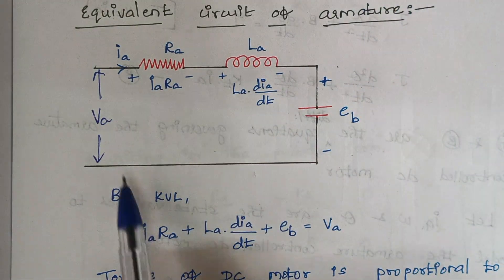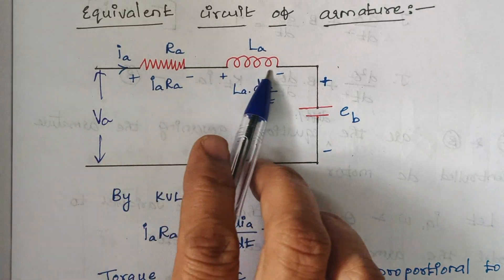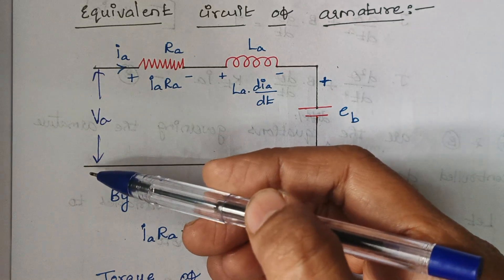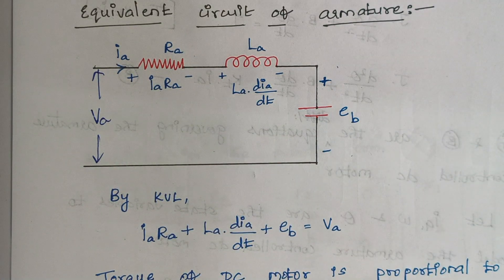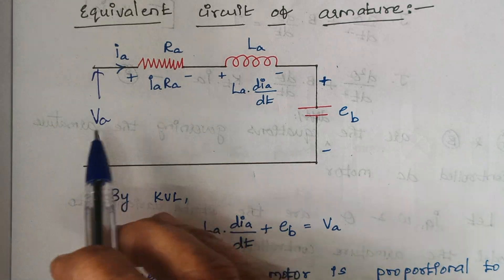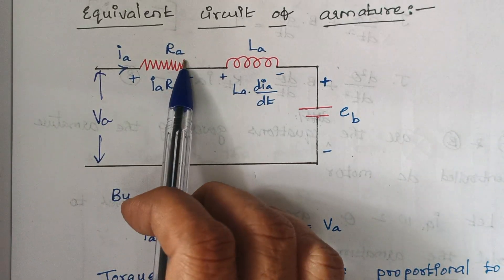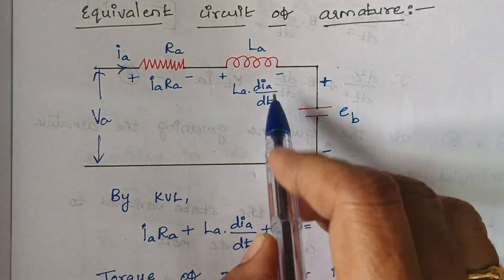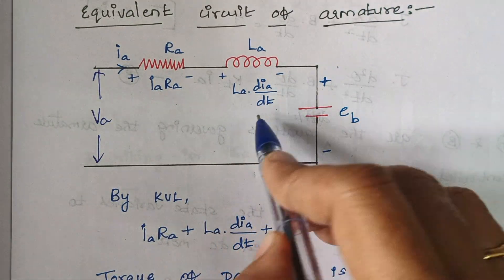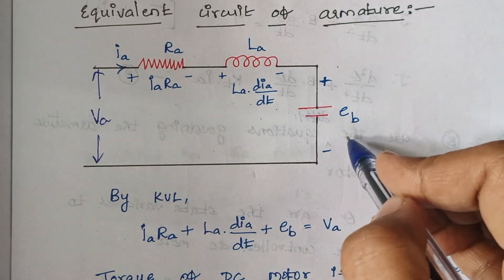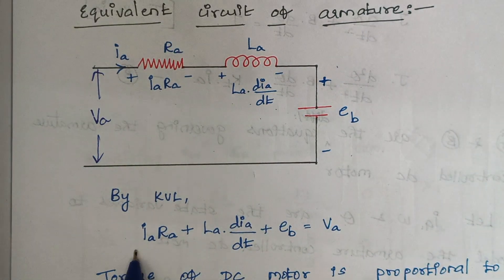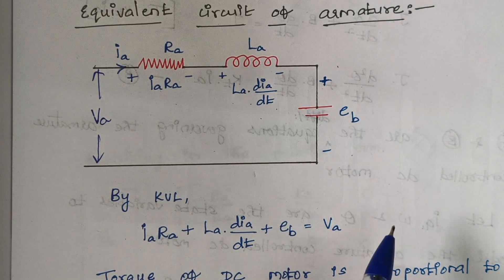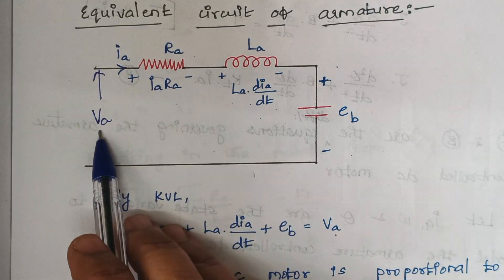When you write the expression, these three things contribute voltage drop and VA is the voltage rise. The voltage drop is contributed by the resistor, giving IA·RA; the drop across the inductor is LA·(dIA/dt); and the next is EB. These three things together equal the voltage rise VA, which is the input voltage.